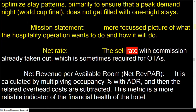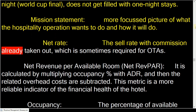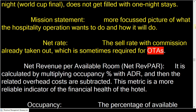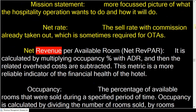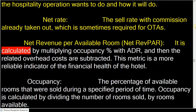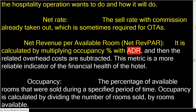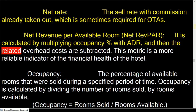Net rate: the sell rate with commission already taken out, which is sometimes required for OTAs. Net revenue per available room is calculated by multiplying occupancy percent with ADR, and then the related overhead costs are subtracted.